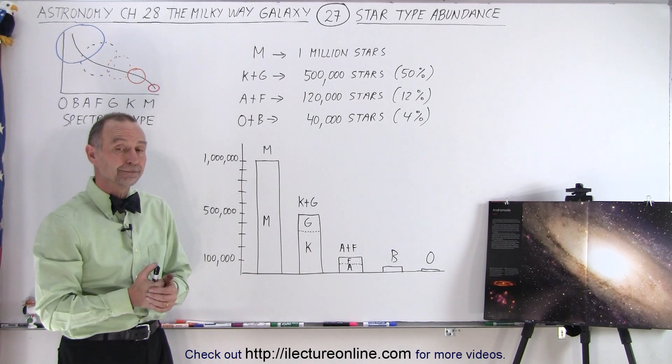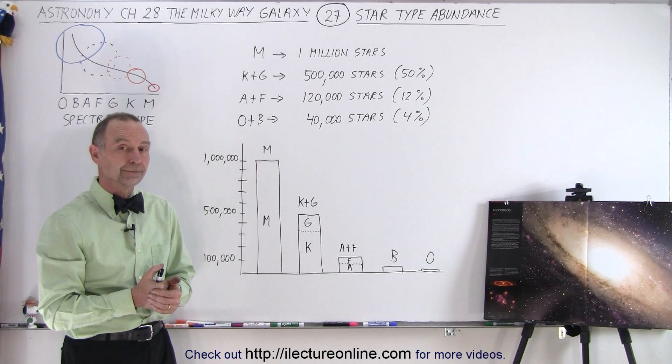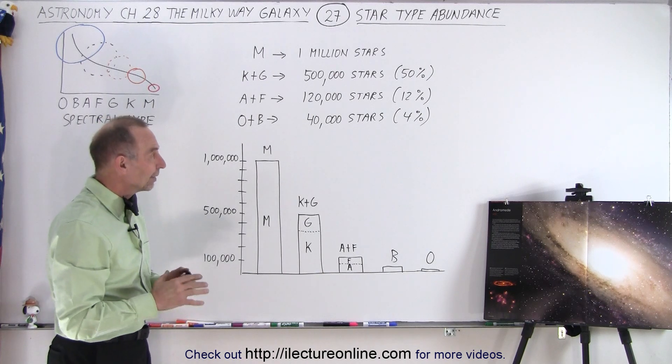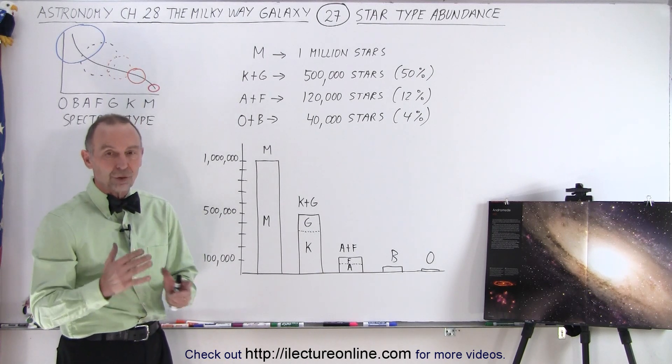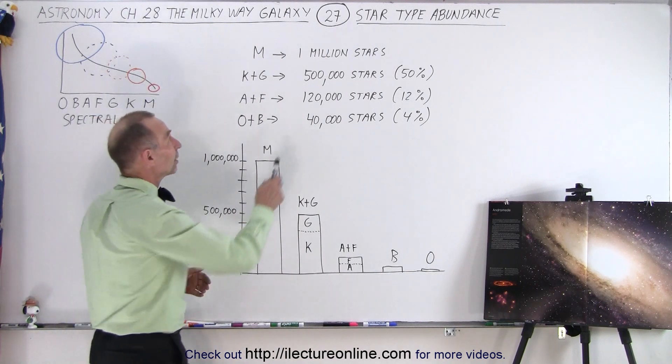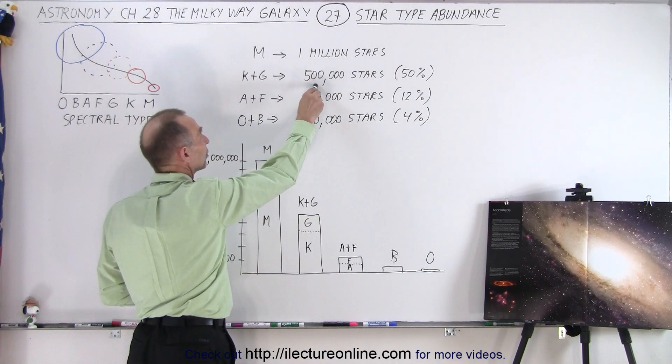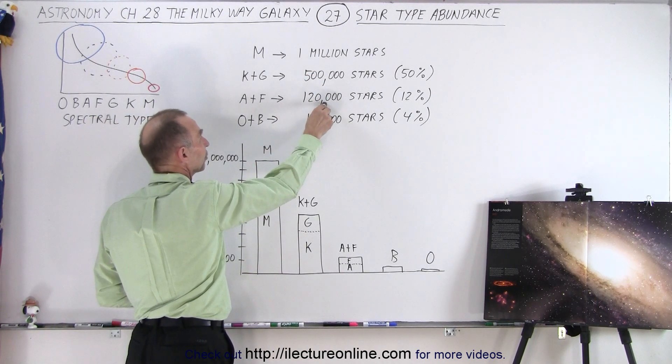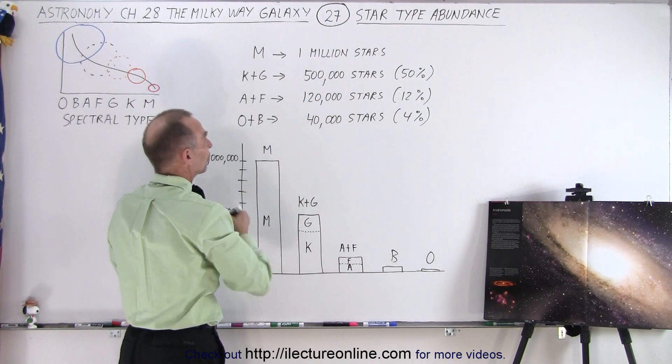When you say it's a million of those stars, you're not saying including those stars? No. Yeah, so this is a little bit different. The way I try to do is comparison. If you have a million of these, you have 500,000 of those, you have 120,000 of those, and 4,000 of those.